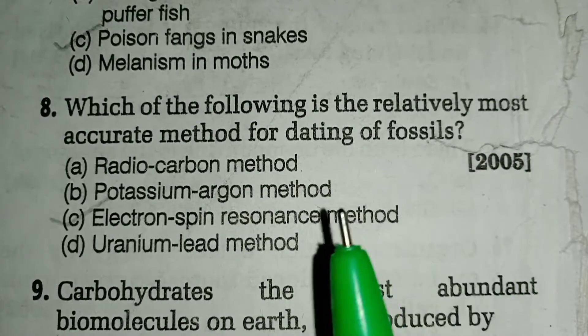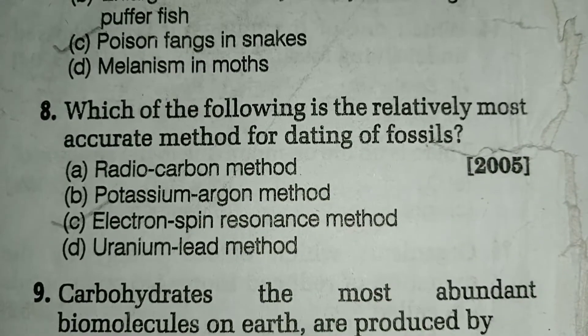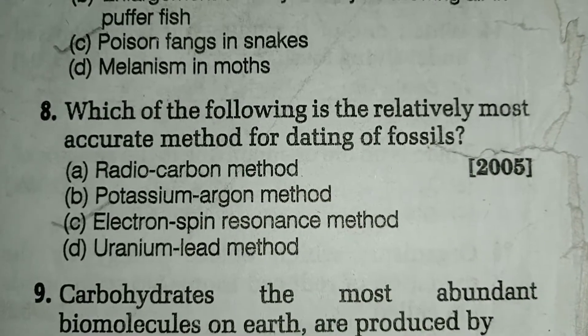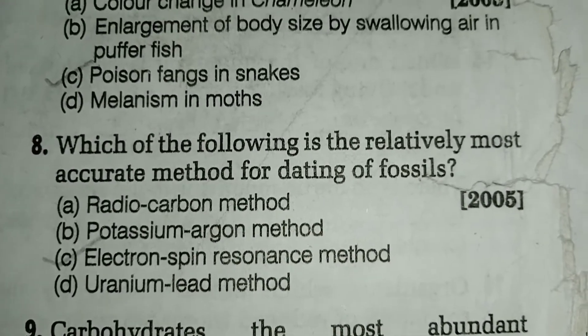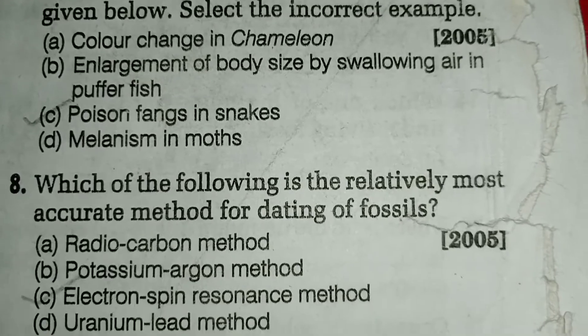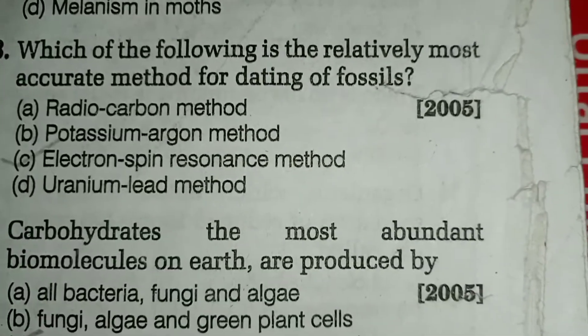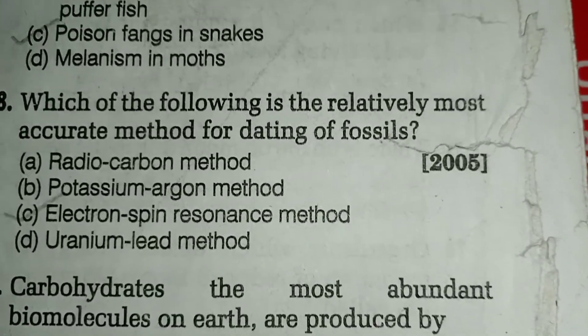Question number eight: which of the following is the relatively most accurate method for dating of fossil? The answer is option number C, electron spin resonance method — this is the most accurate method for dating of fossils.